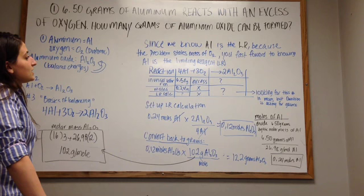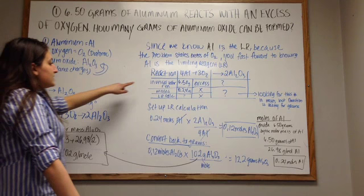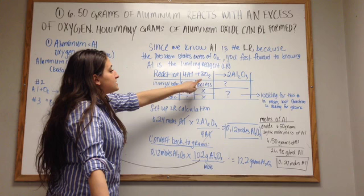We know that Al is the limiting reagent because the problem states we have an excess of oxygen, so you fast forward to knowing that Al is limiting reagent, and we set up either the box or by hand, whichever way you prefer. We know that in the vessel before the reaction, we're given that we have 6.50 grams of aluminum. We know that there's an excess of O2, so we're just calculating the aluminum.